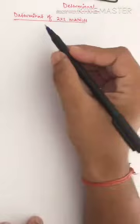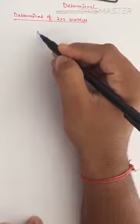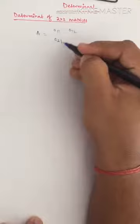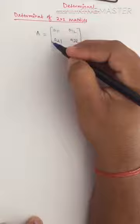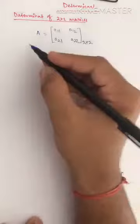So let's find the determinant of two cross two matrices. The general form of a matrix of order two cross two can be written as a₁₁, a₁₂, a₂₁, a₂₂. This is of the order two cross two, and is said to be a two cross two matrix. So let us find the determinant of two cross two matrices.